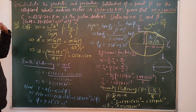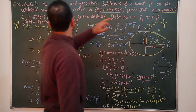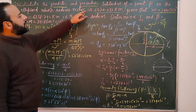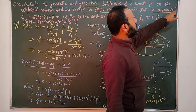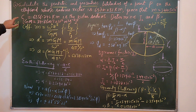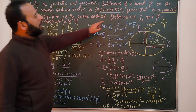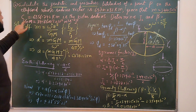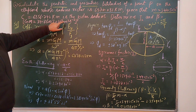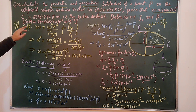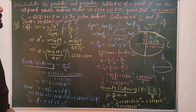Solutions to problems in geophysics — question number two. Calculate the geodetic and geocentric latitudes of a point P on the ellipsoid whose radius vector is 6370.031 km, given that m is equal to 3.4425 × 10⁻³, c is equal to 6356.742 km (the polar radius). Determine J2 and beta. GM is equal to 39.86005 × 10¹³ m³/s², where G is the universal gravitational constant and M is the mass of the Earth.